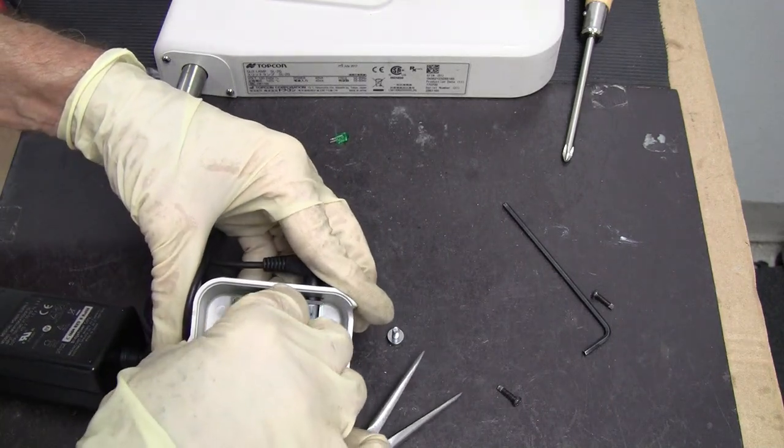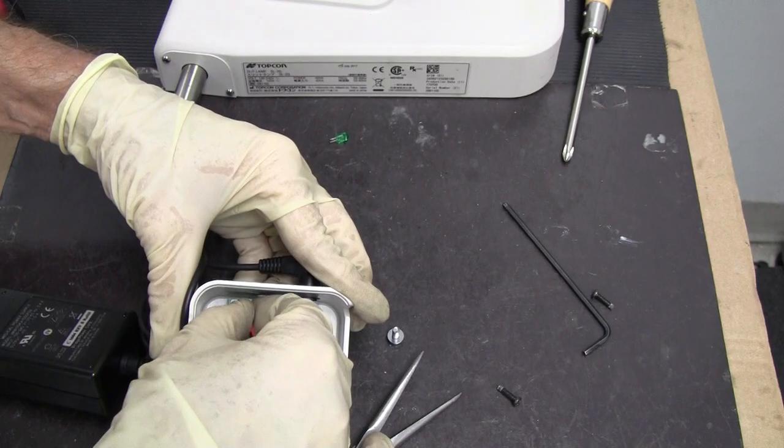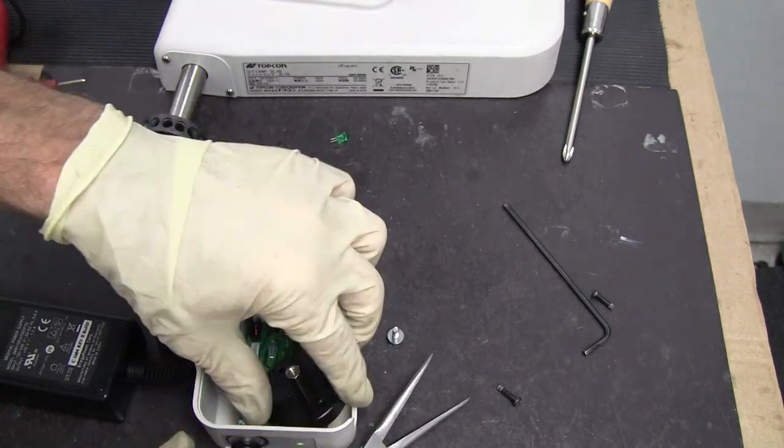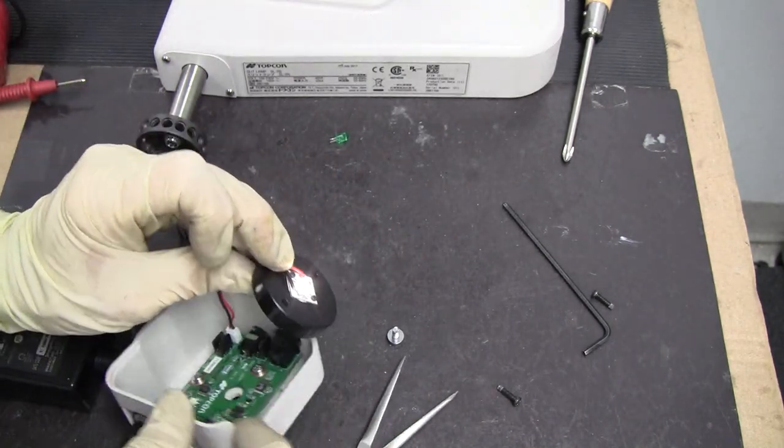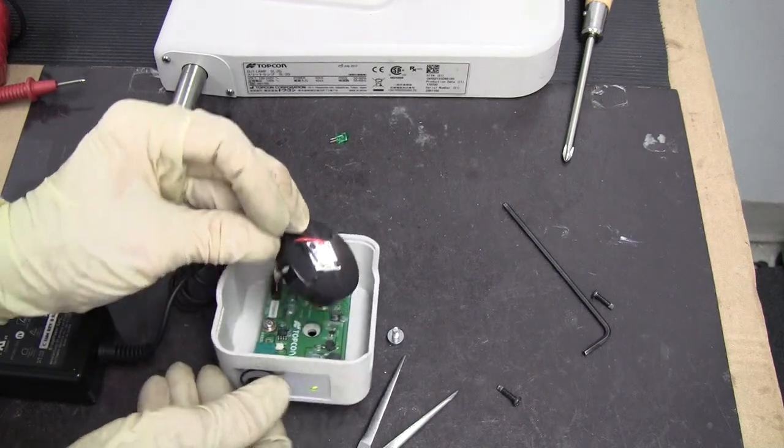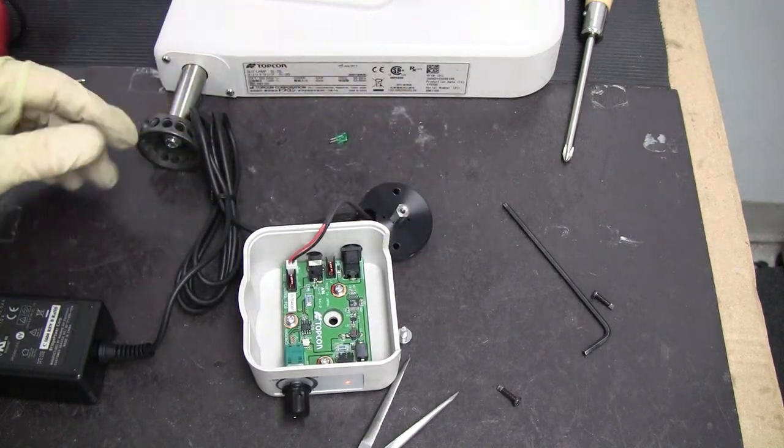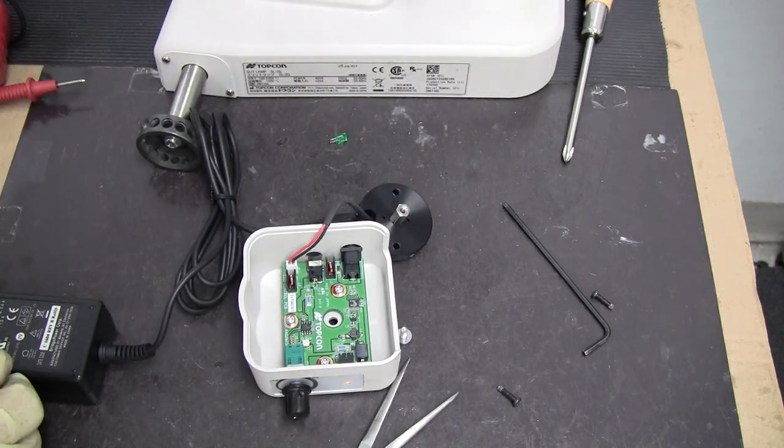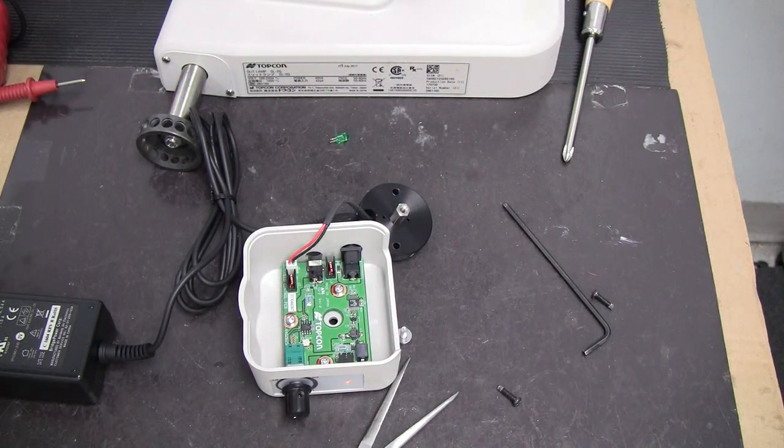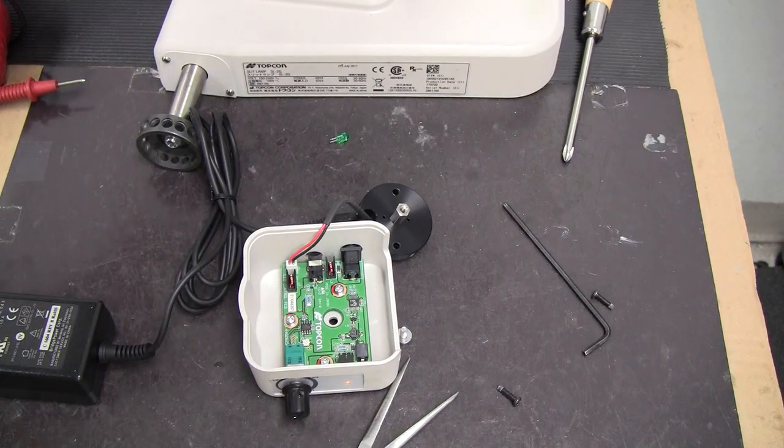If your LED is working, then it should be coming on with the rheostat when the rheostat is turned on. So those are the components of the Topcon SL2G.